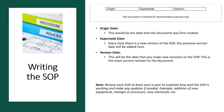This is the most current revision to the document; all previous versions will need to be filed and taken out of circulation. Review each SOP at least once a year to evaluate how well the SOP is working and make any updates if needed, such as for new equipment, changes in processes, or new chemicals. SOPs can also be reviewed during internal audits when auditing the plant's programs and procedures, as required by the food safety management system.